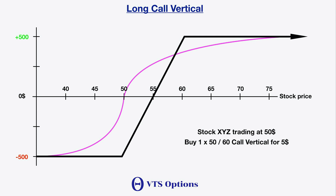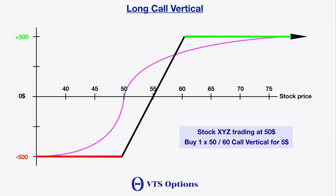It's always best to explain through examples. Here's a hypothetical trade: we have stock XYZ trading at $50, and we're going to buy a 50/60 call vertical for $5. That would be a long 50 call option and a short 60 further out-of-the-money call option. Again, it's done in a single transaction, and doing this makes it a vertical spread — the max gain and max loss are now capped.